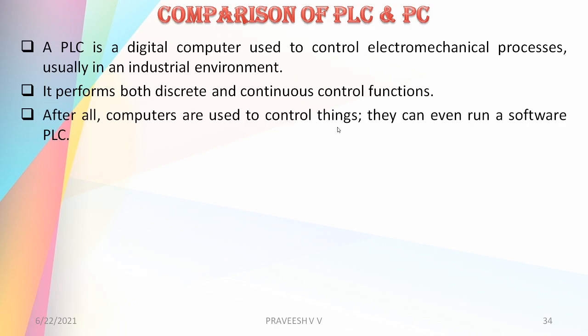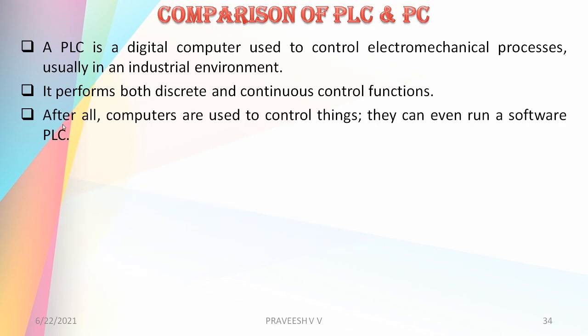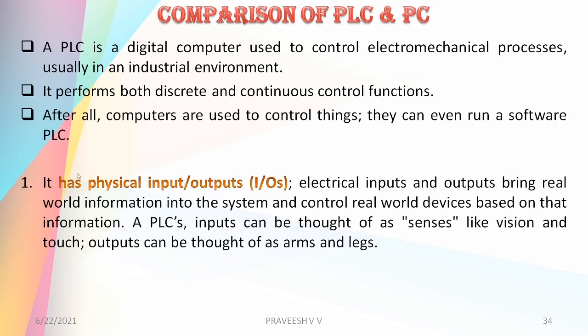Computers are used to control things as well — they can even run a software PLC. A few comparison points: first, PLCs have physical input and output. Electrical inputs and outputs bring real-world information into the system and control real-world devices based on the information and the program.